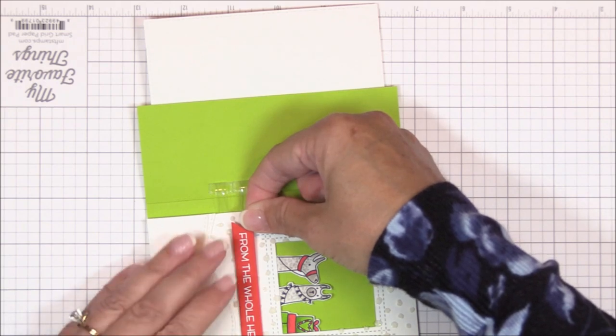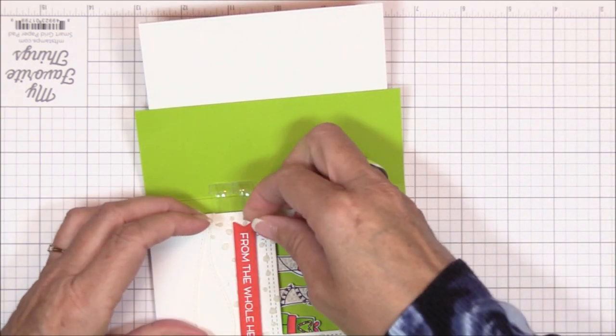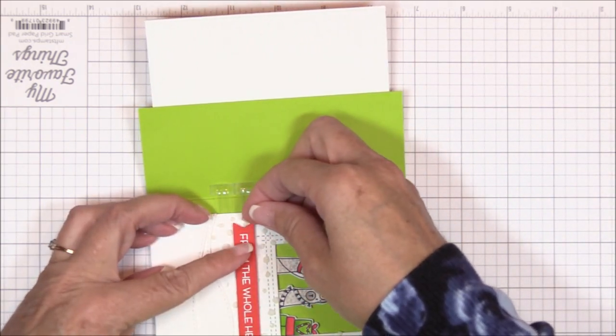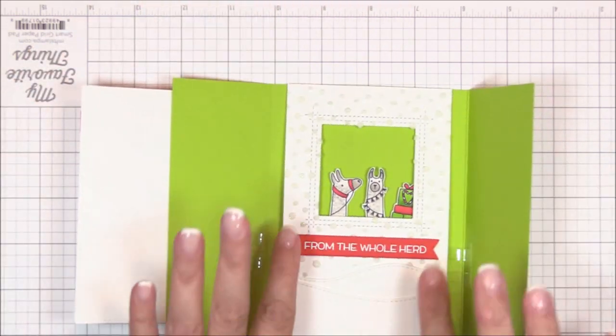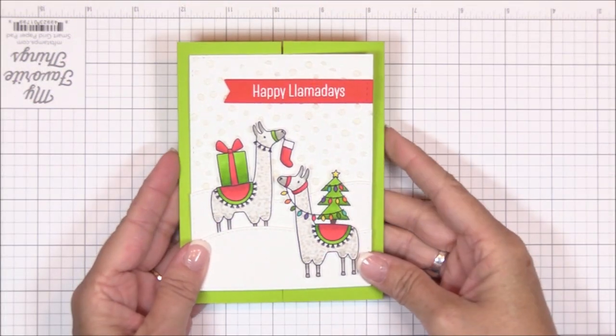The interior sentiment was stamped, after a bit of stamp surgery on one of the stamps from the whole herd stamp set, just as I did the front sentiment, but I die cut it using the essential fishtail sentiment strips instead.